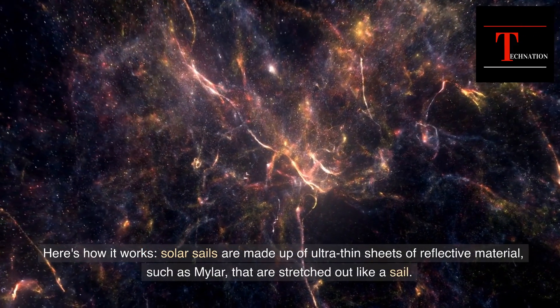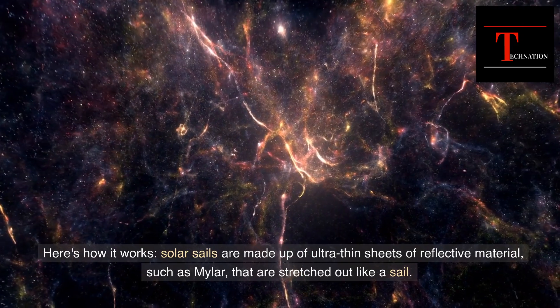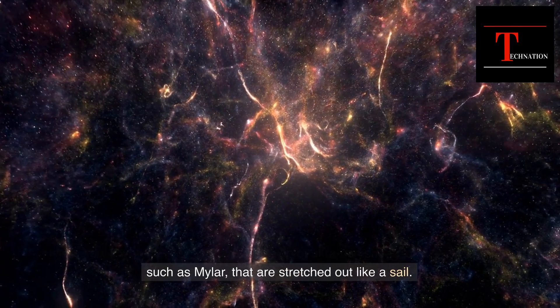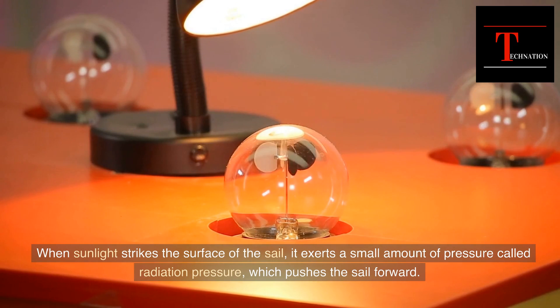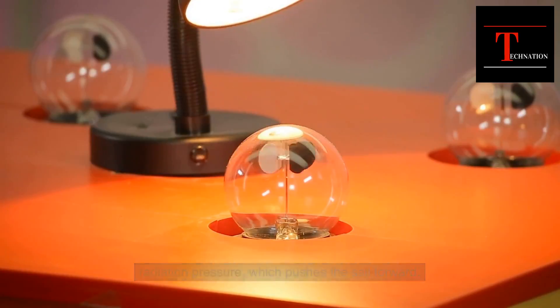Here's how it works. Solar sails are made up of ultra-thin sheets of reflective material, such as Mylar, that are stretched out like a sail. When sunlight strikes the surface of the sail, it exerts a small amount of pressure called radiation pressure, which pushes the sail forward.